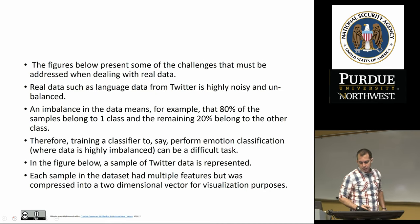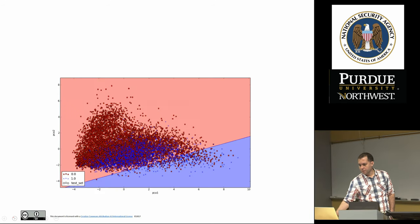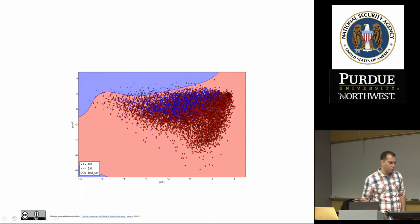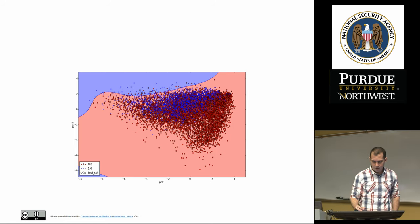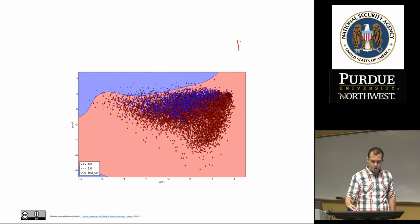In the next set of slides, I have some figures. These two figures are very important. We have samples that are red and samples that are blue, and they've been compressed using a technique called Principal Component Analysis (PCA). PCA is a technique for taking a large data set and reducing it to something that can be graphed. We want to build a classifier that can separate the blue samples from the red samples with the highest accuracy and the fewest errors possible.